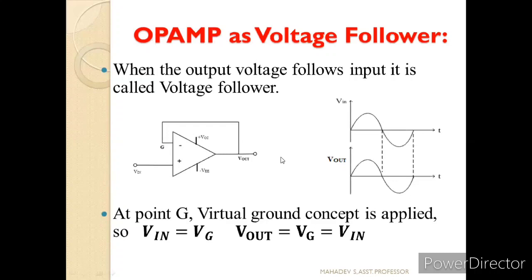Now let us see the op-amp as a voltage follower — following the input means whatever you give as input, the same output should be obtained. The positive terminal is given the supply and the negative terminal is connected directly to the feedback without any resistor. Because of the virtual ground concept, VG equals VIN. Since VG is directly connected to the output without any resistor, Vout equals VG equals VIN. The output is just following the input and is in the same phase, which is why it is called a voltage follower.